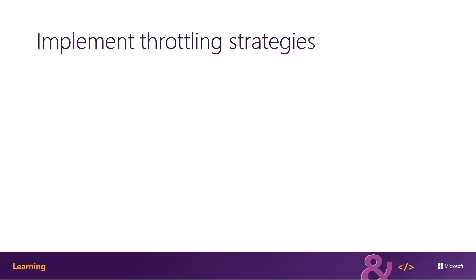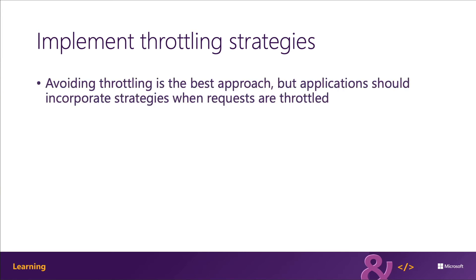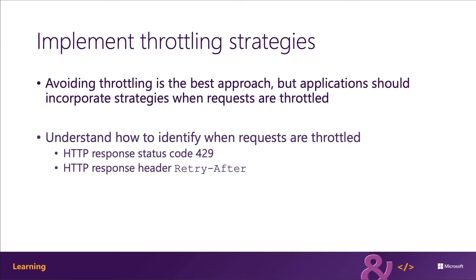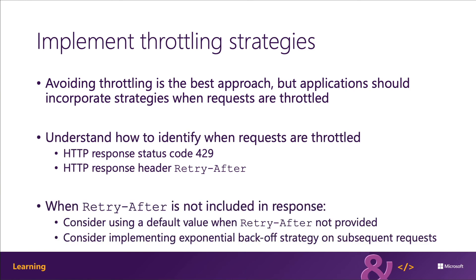Avoiding scenarios where your application's requests to Microsoft Graph will be throttled is always a good first approach, but your application should also incorporate logic for situations when requests are throttled. The first step is to identify when they're being throttled. This can easily be done by inspecting the HTTP status code in the response. The status code 429 indicates too many requests and is how Microsoft Graph tells the client their requests are being throttled. Many responses include an HTTP retry-after header that specifies the number of seconds the client should wait before submitting another request.